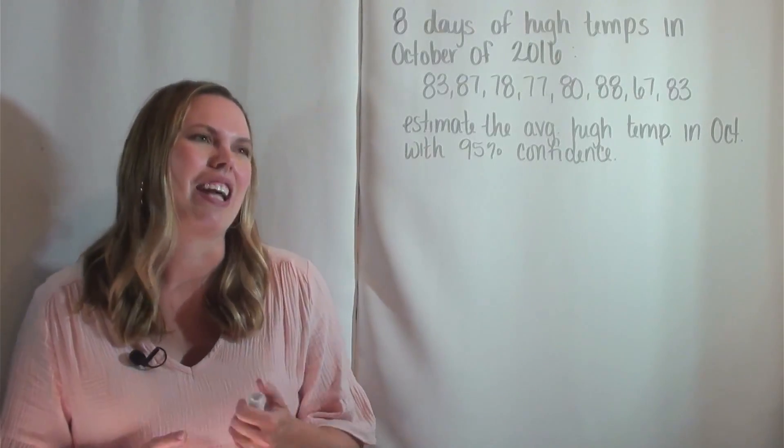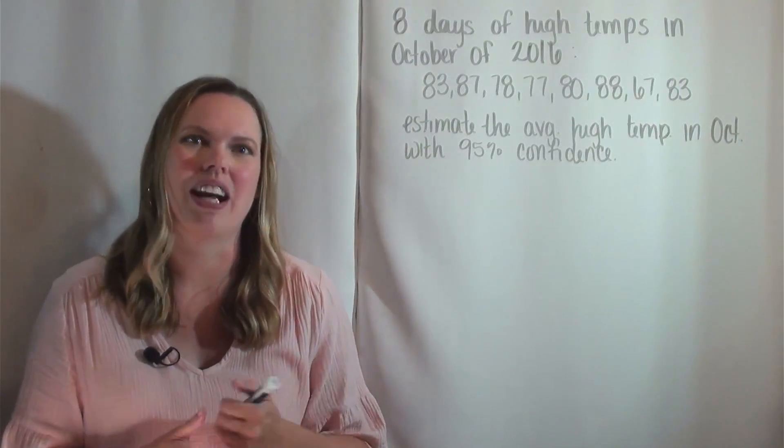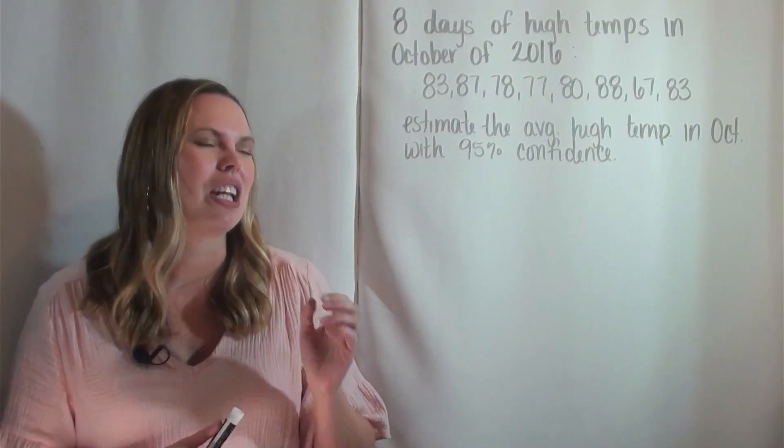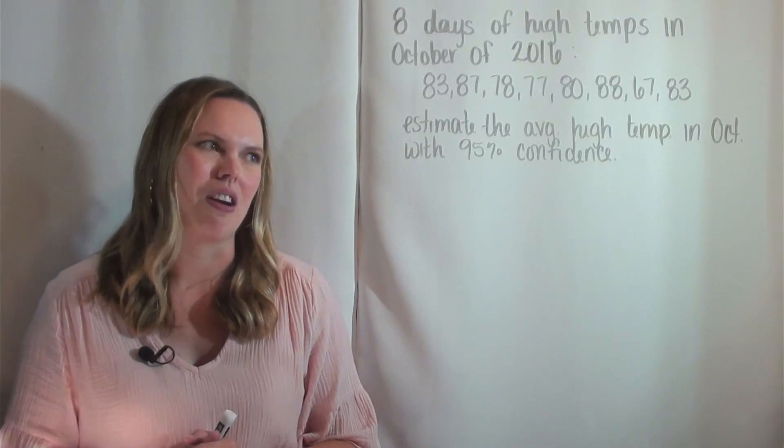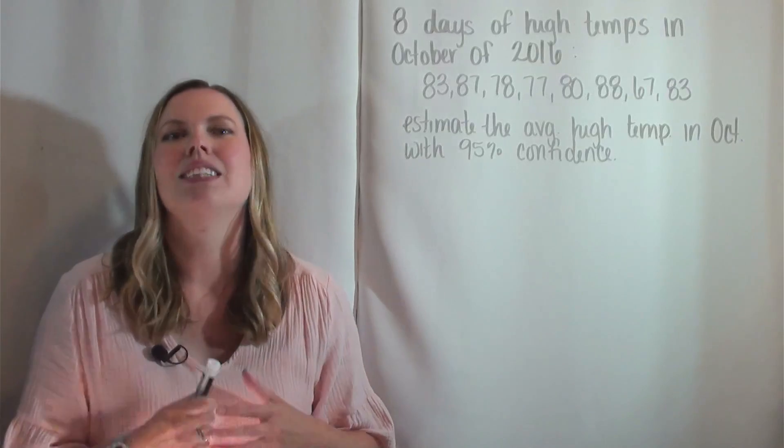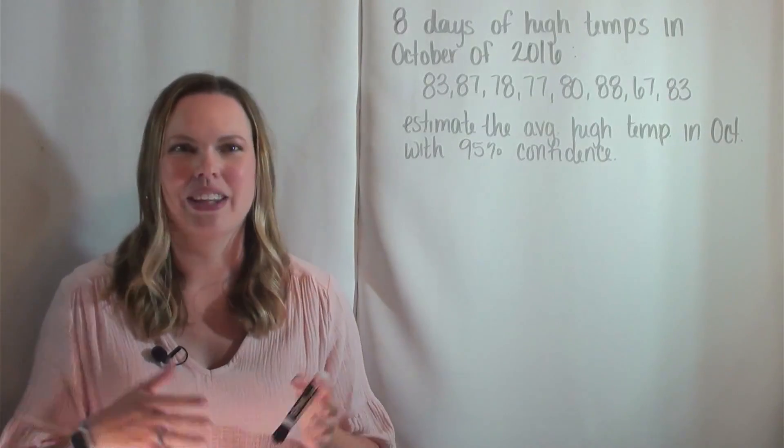So this is something that you can do with just data that you can gather pretty easily. I gathered eight days and what their high temperatures were. We're going to estimate the average high temperature in October with 95% confidence, which tells us we're building a confidence interval. There's no way to do this without that confidence interval.